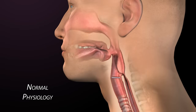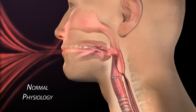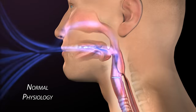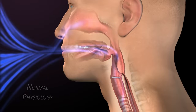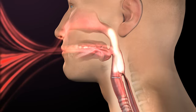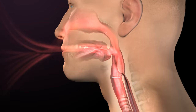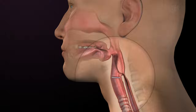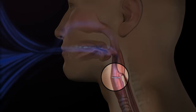In a normal airway without a tracheostomy tube, inhalation and exhalation occur through the mouth and nose. Airflow moving through the airway enables smell and taste, normal sensation, and, of course, speech by allowing the air to pass through the vocal folds.